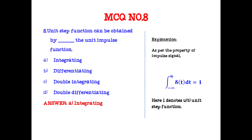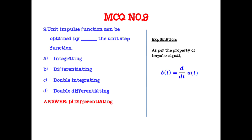The unit step function can be obtained by integrating the unit impulse function. As the property states, the integral from −∞ to ∞ of δ(t) dt = 1, where 1 denotes the unit step function. Conversely, the unit impulse function can be obtained by differentiating the unit step function: δ(t) = d/dt of u(t).